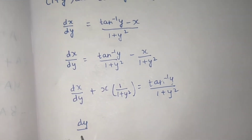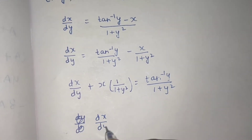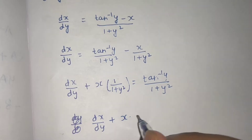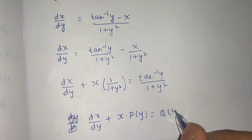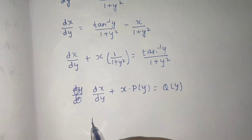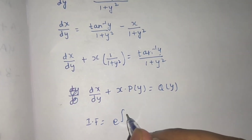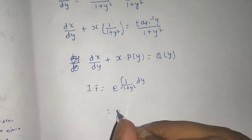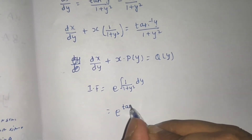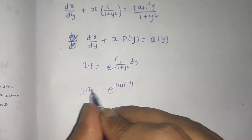This is of the standard form dx/dy plus x·P(y) equals Q(y). So the integrating factor in this case will be e to the power of the integral of P, which is 1/(1 + y²), with respect to y. The integral of 1/(1 + y²) is simply tan⁻¹y, so the integrating factor is e^(tan⁻¹y).